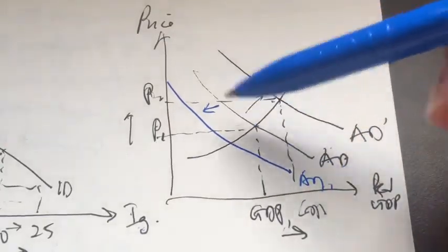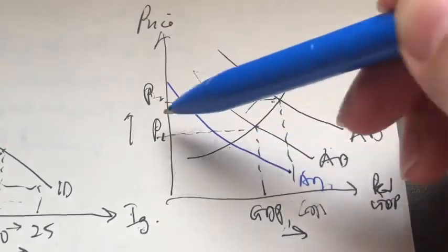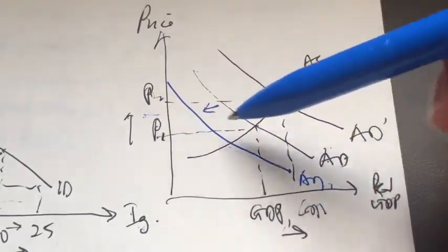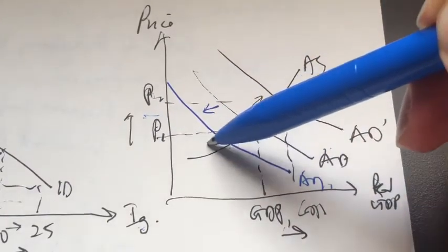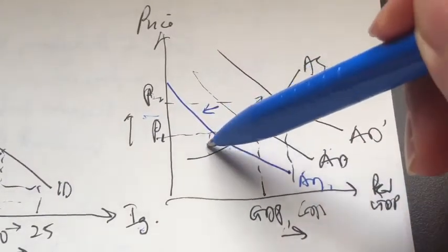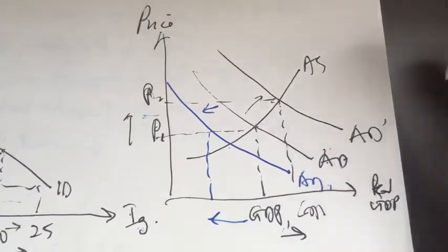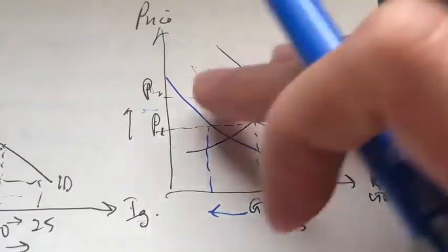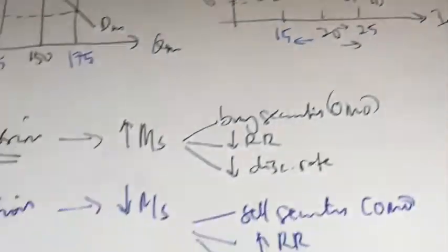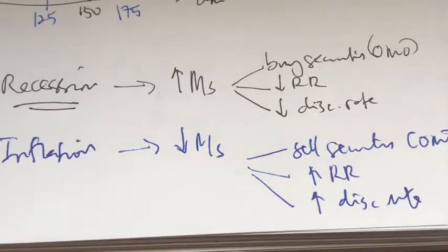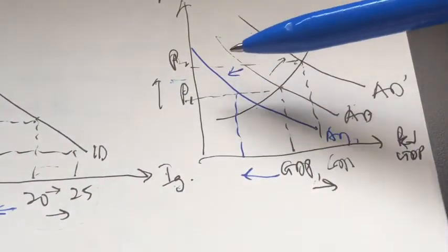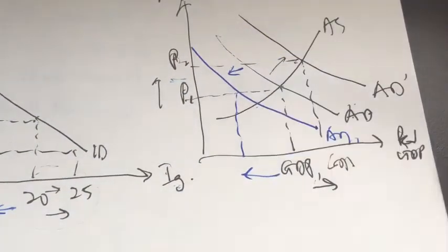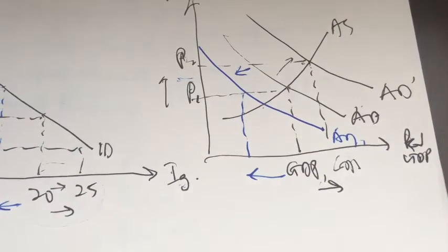Remember, we have a ratchet effect, so the price won't fall — the price will maintain at P1. We might have a fall in output. Remember, the problem was inflation, so we want to curb or stop the price from increasing further, and that's basically what we did.